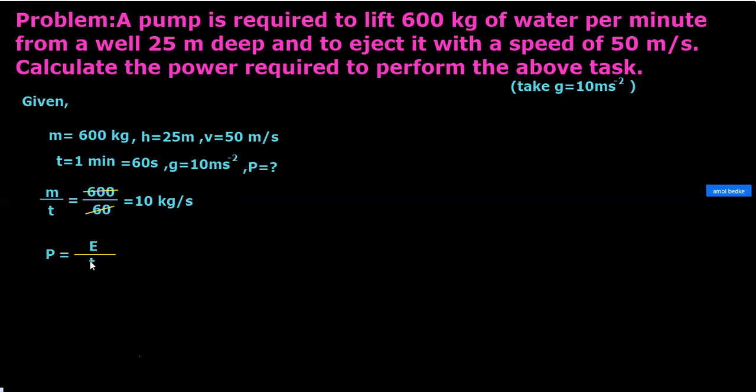But here this energy is nothing but total energy, that is potential energy plus kinetic energy. And that's why it's mgh plus half mv² divided by time t, because we are lifting from some depth as well as we are throwing with some velocity also. That's why total energy is equal to potential energy plus kinetic energy divided by time.